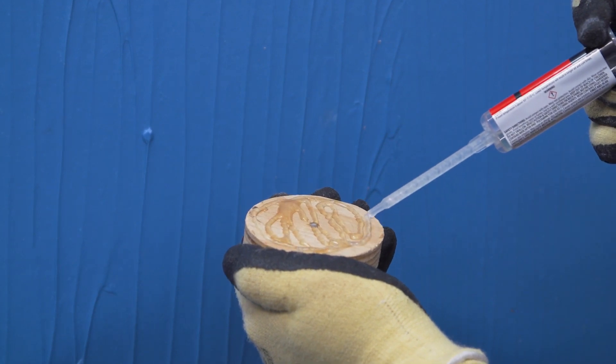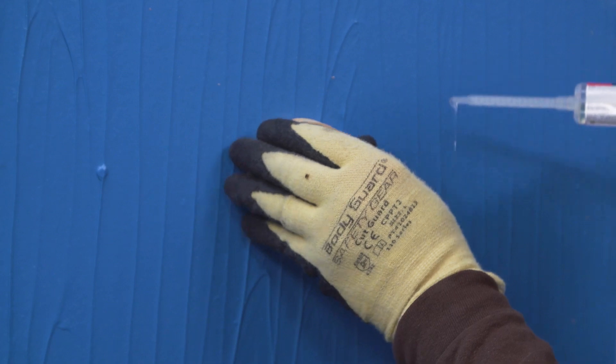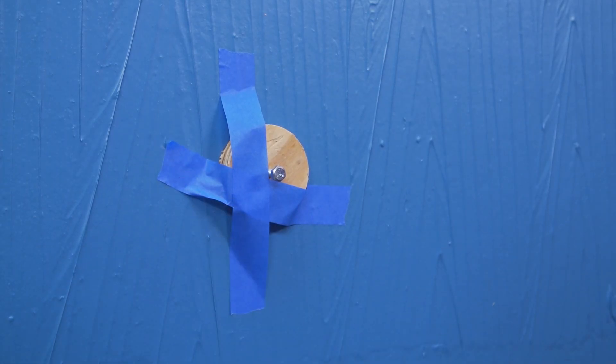First, apply the epoxy adhesive to the back of the puck, then press the puck to the wall membrane. Using painter's tape, tape the puck to the wall until the adhesive sets.